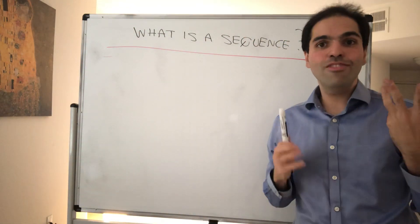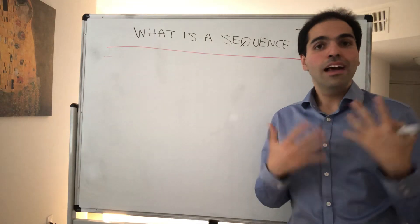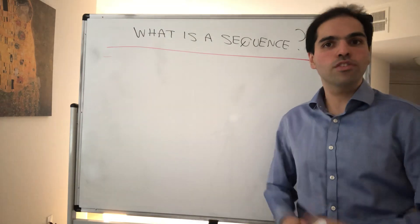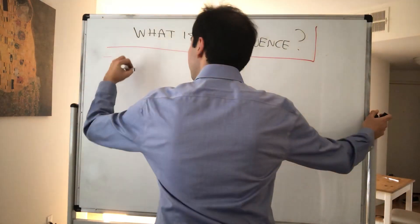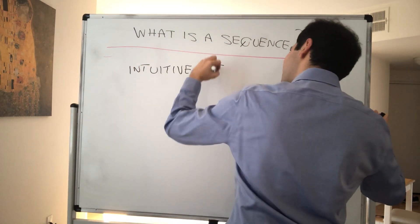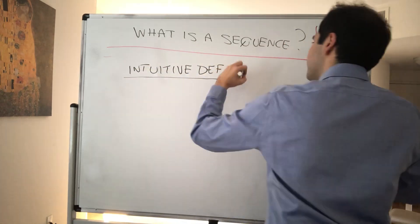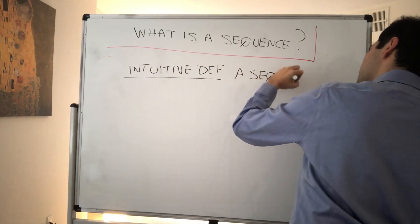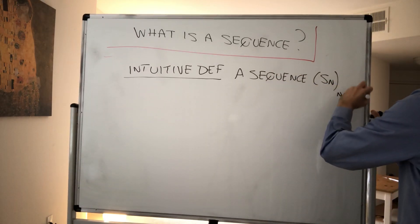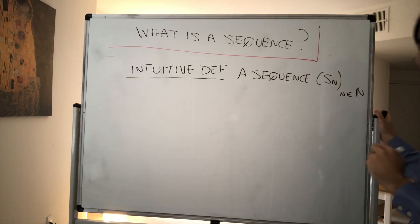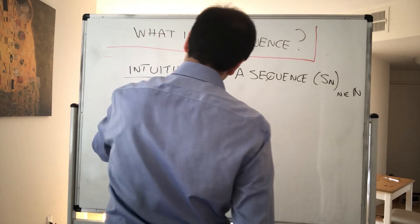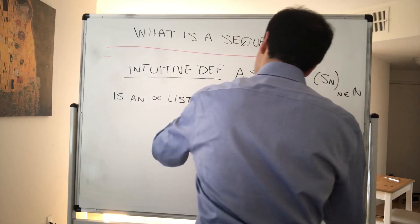Thanks for watching. Today I'm going to define what a sequence is. Intuitively speaking, all that it is is just an infinite list of real numbers. So here's our intuitive definition, which we'll make rigorous at the end. A sequence (Sn), where n is in ℕ, is just an infinite list of real numbers.